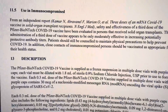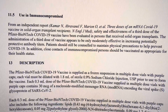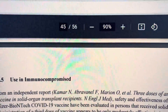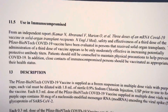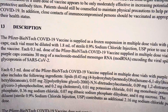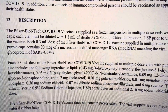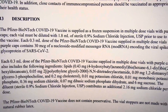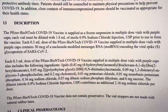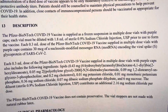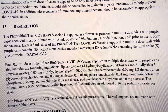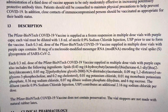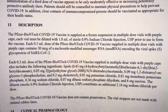It took us 45 pages before we found out what the ingredients are — but we did find the ingredients. On page 45 it says each dose will contain the modified mRNA spike protein — the viral spike protein of the SARS-CoV-2 virus.